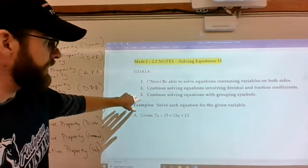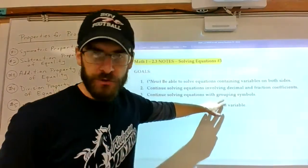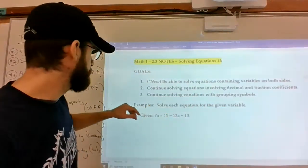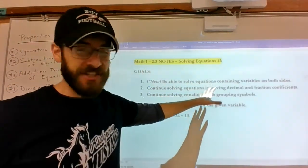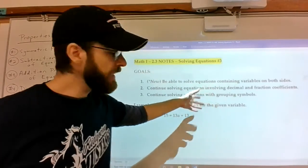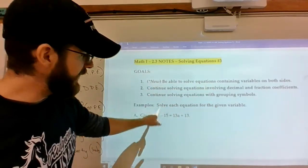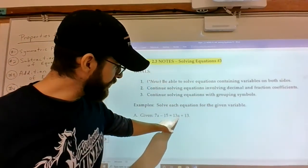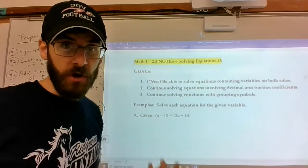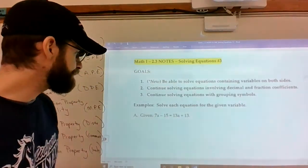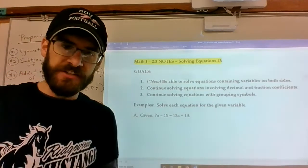So I still want you to be able to solve with grouping symbols, parentheses. Continue to be able to do it with decimal and fraction coefficients. And then the new skill is, hey, what if there's a variable on both sides of the equation? Can we still solve the equation that way?